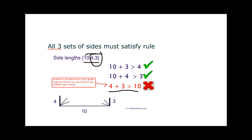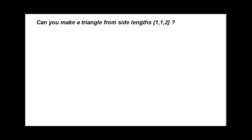Let's practice. Can you make a triangle from side lengths of 1, 1, and 2? Remember, all we care about are the two smaller sides. So we look at 1 and 1. Does 1 plus 1 equal greater than 2? Nope. So the answer is no — we cannot form a triangle.